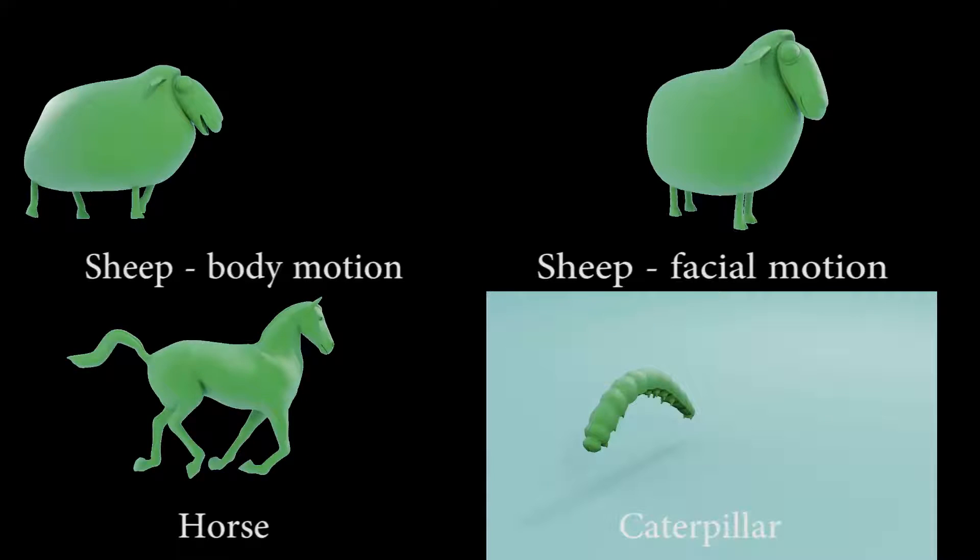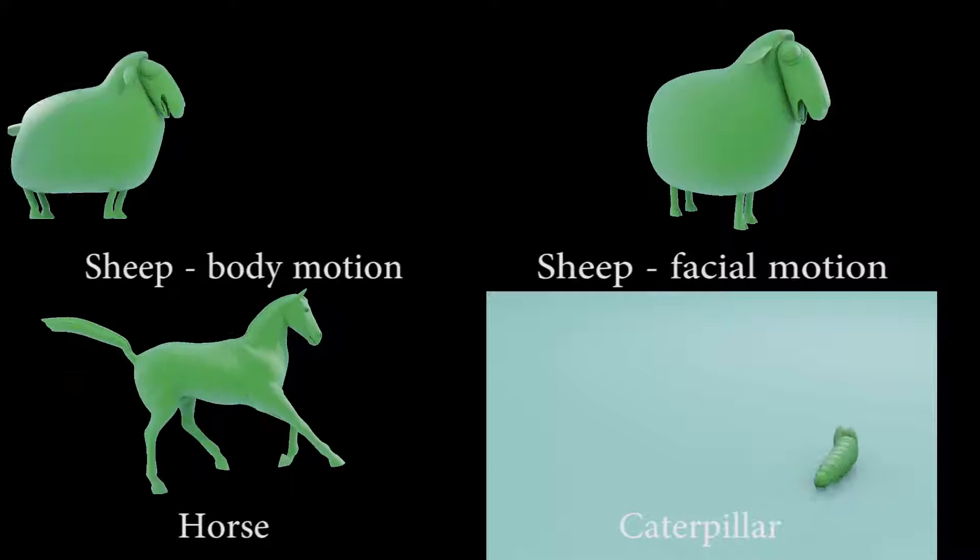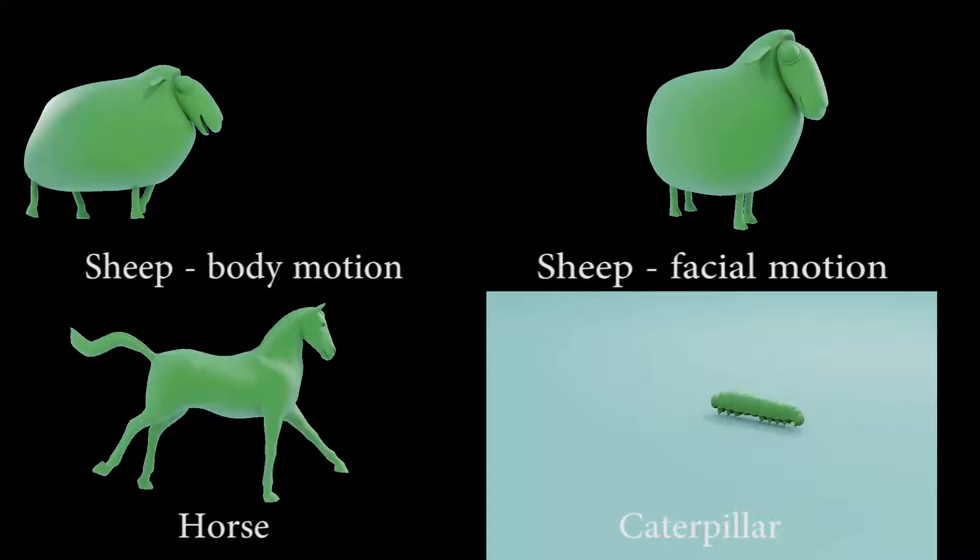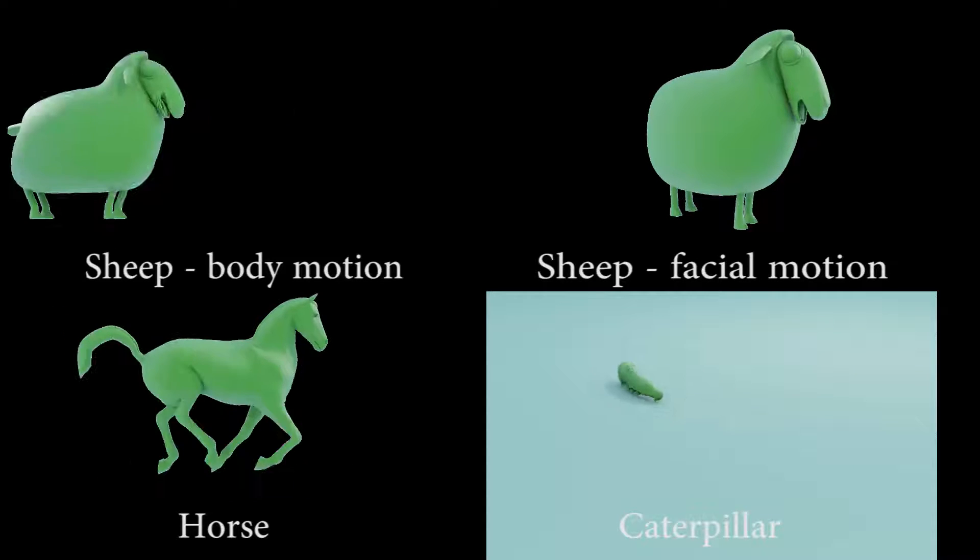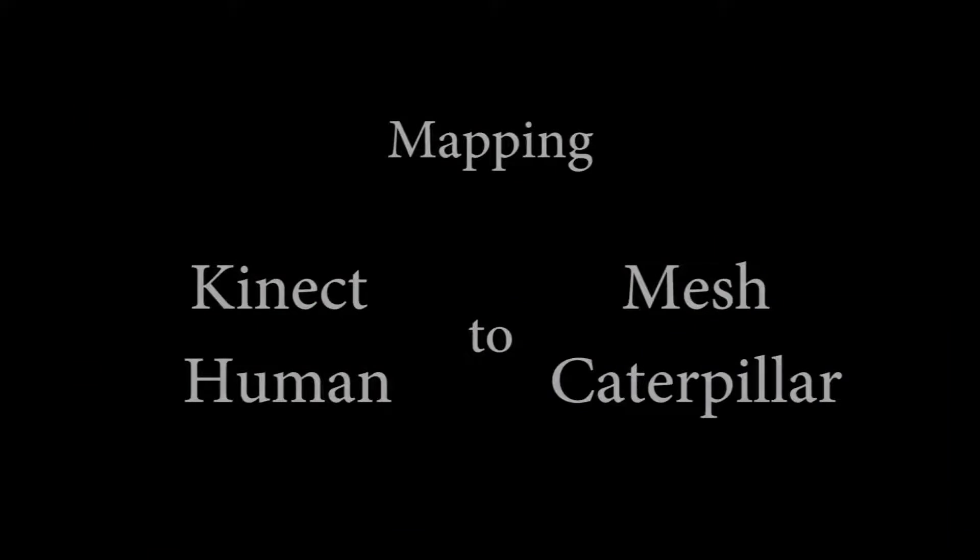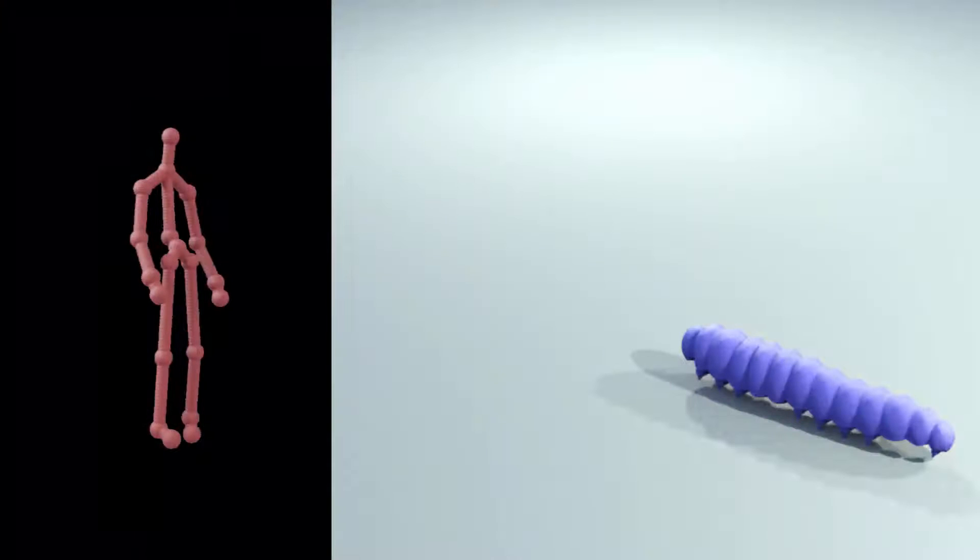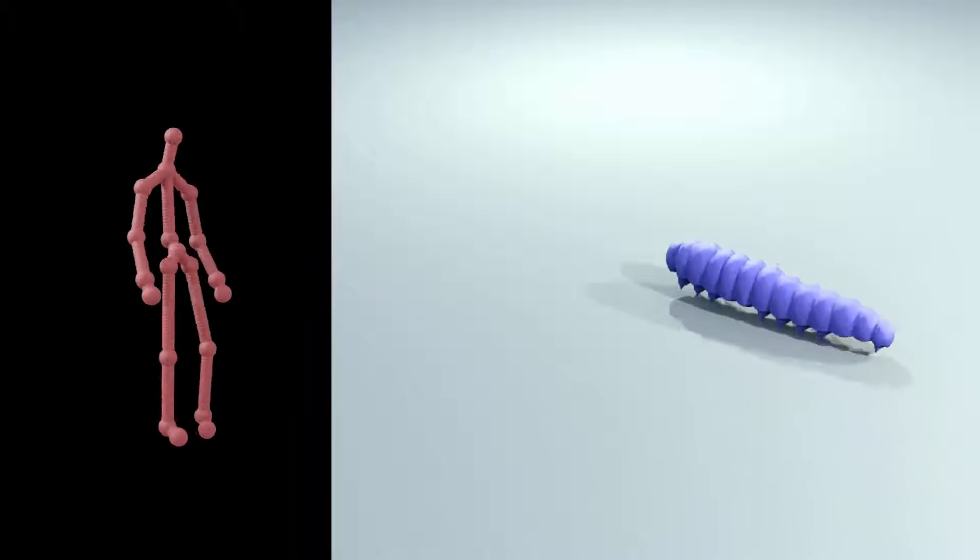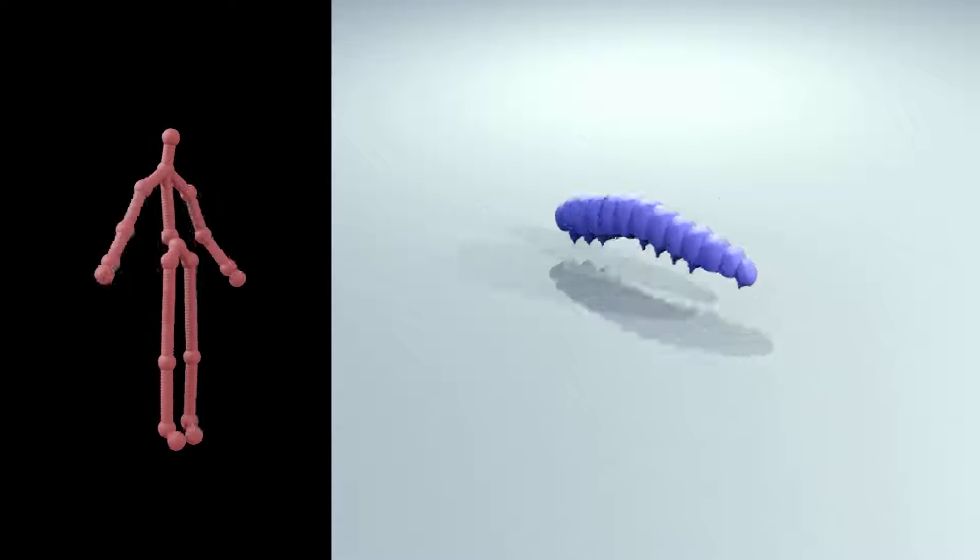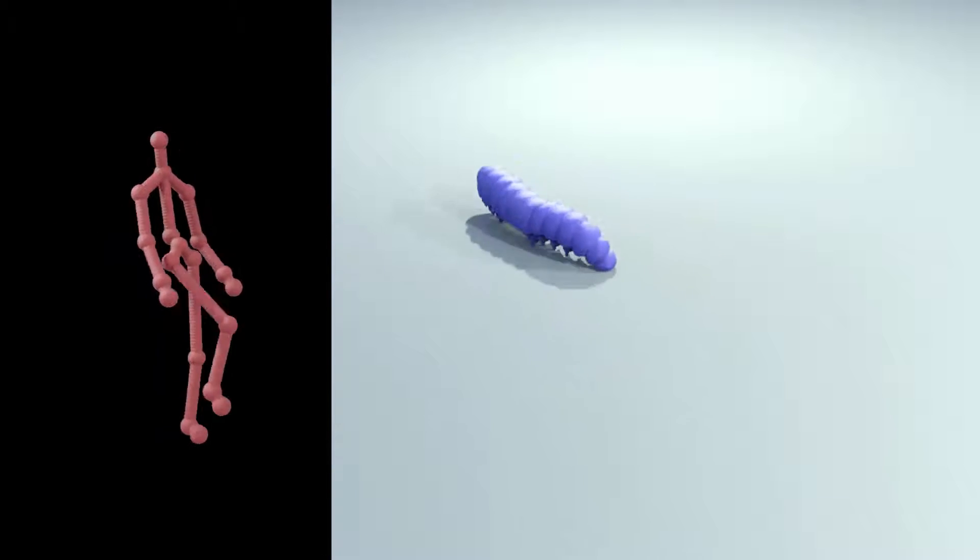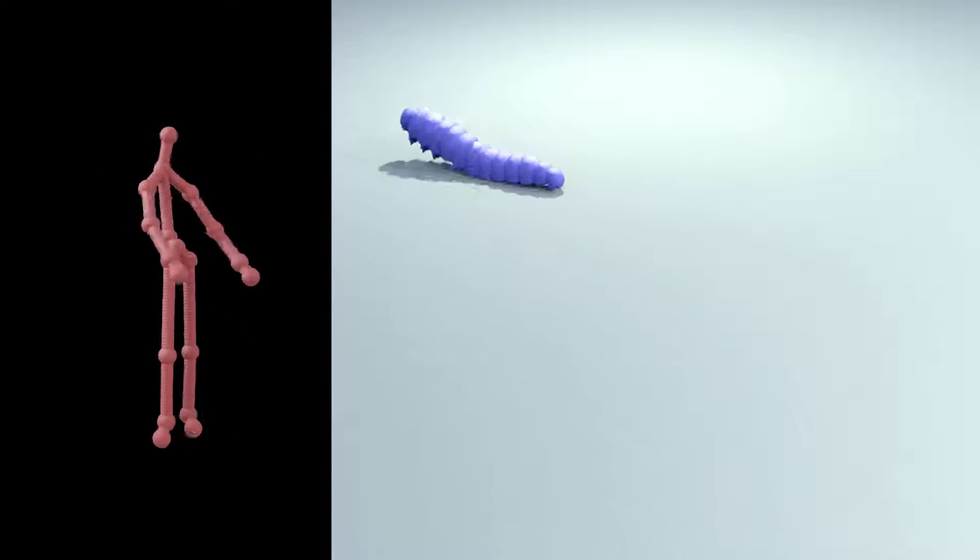We test our method on four artist-created character animations. A galloping horse, a crawling caterpillar, and a sheep with body and face motions. Even with only eight correspondences, we can create expressive animations in real-time. Here, a human puppets a caterpillar with three sets of controls: walk, lean, and jump with arms raised.